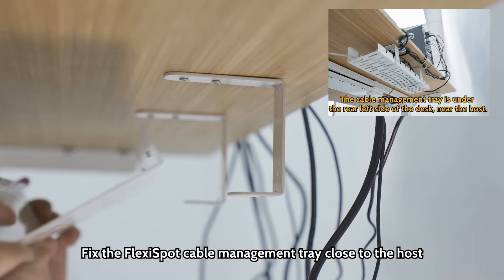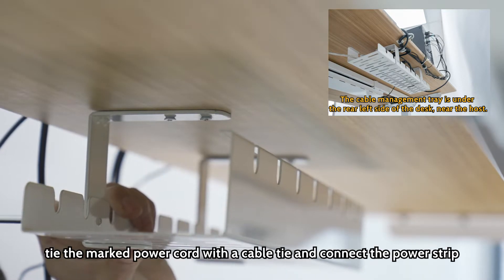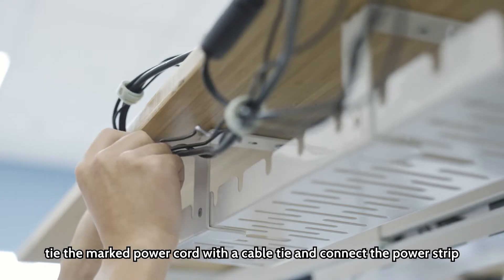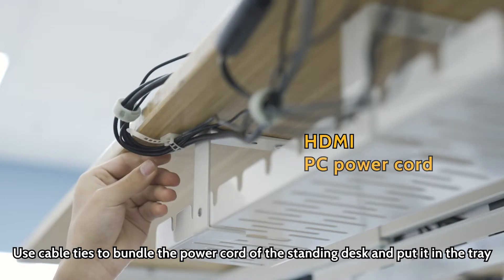Fix the Flexispot cable management tray close to the host. After fixing the tray, tie the marked power cord with a cable tie and connect the power strip. Use cable ties to bundle the power cord of the standing desk and put it in the tray.